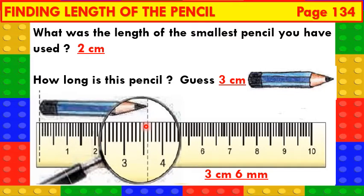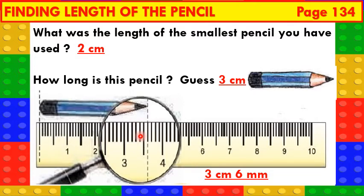Children, see the scale. Here, 1 centimetre has 10 equal parts. Let us count: 1, 2, 3, 4, 5, 6, 7, 8, 9 and 10. And children, do you know, 1 tenth of a centimetre is called 1 millimetre. CM is the short form of centimetre. MM is the short form for millimetre. That means 1 centimetre consists of 10 millimetres.